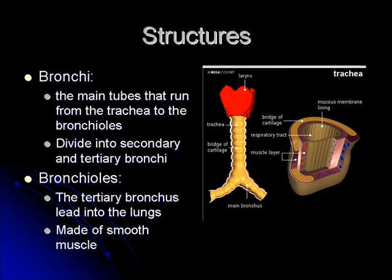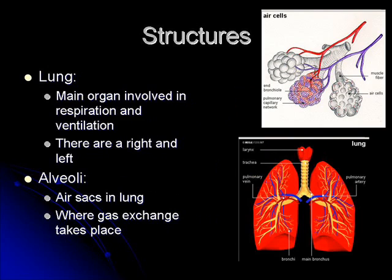The bronchi continue to divide up into different levels — secondary, tertiary, and so on — until you get to bronchioles, which are just much smaller tubes. These are made of smooth muscle and they carry on, continuing to break down into smaller and smaller tubes. As the bronchioles keep dividing, they finally end in structures called alveoli — air sacs in your lungs at the end of all that finite branching. This is where gas exchange actually takes place, where the process of respiration occurs.